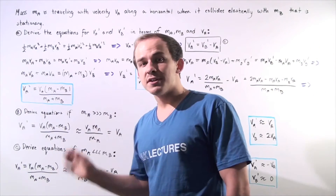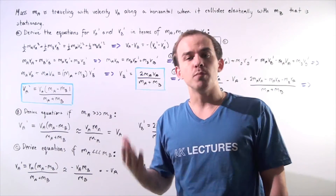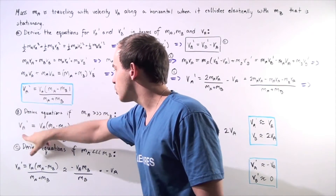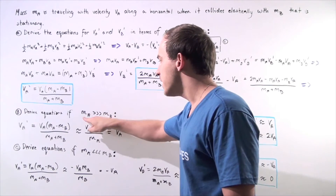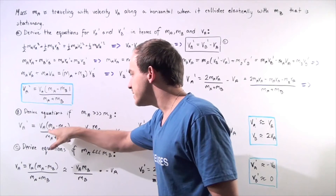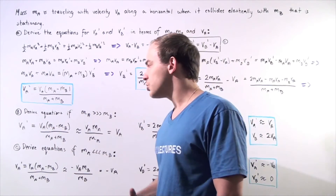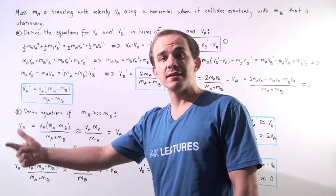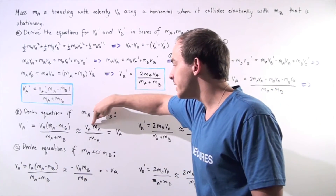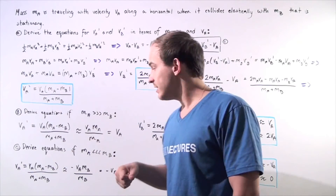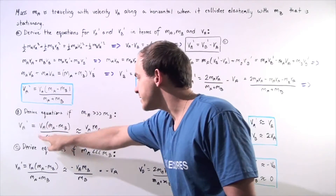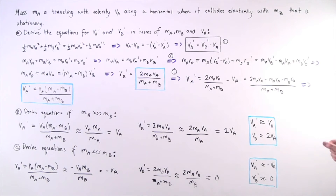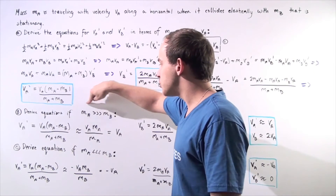Now let's go to part B. We want to derive the same equations assuming that the mass of object A is much, much larger than the mass of object B. If MA is much larger than MB — for example, MA equals 1000 and MB equals 1 — then MA minus MB is approximately MA, and MA plus MB is also approximately MA. The MA's cancel, and we get VA prime is approximately equal to VA.